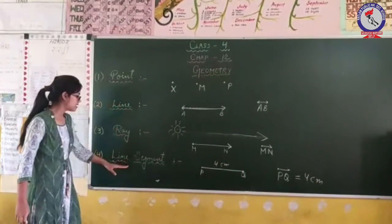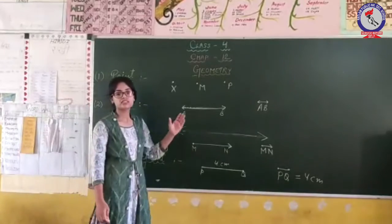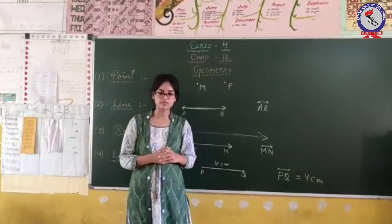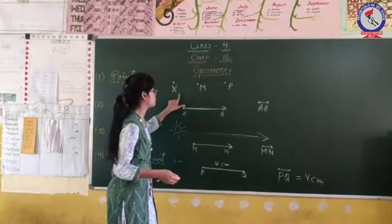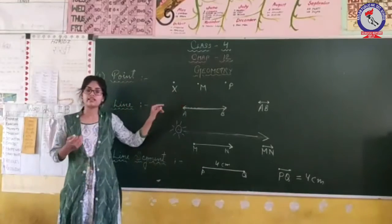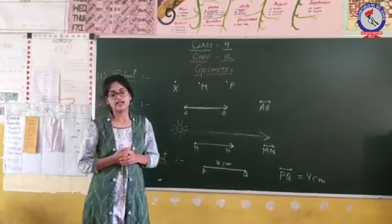Point, line, ray, and line segment will make different shapes like triangle, square, rectangle, circle, etc. Thank you.